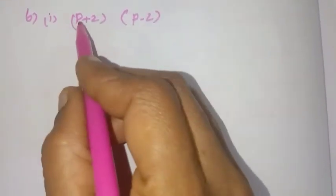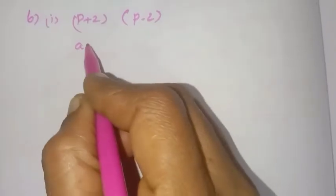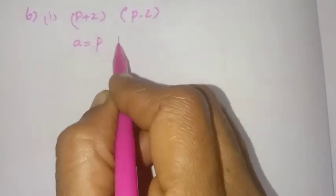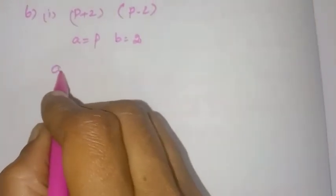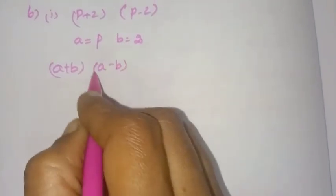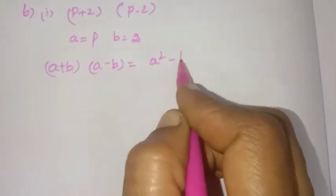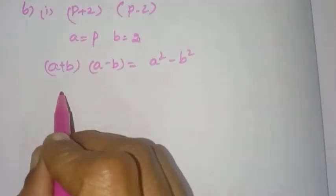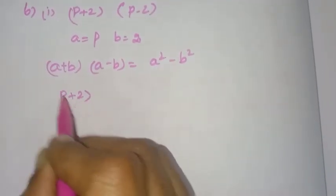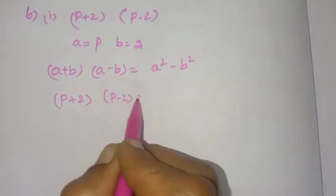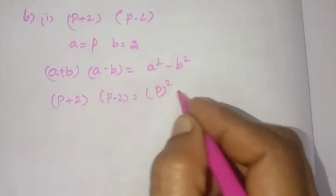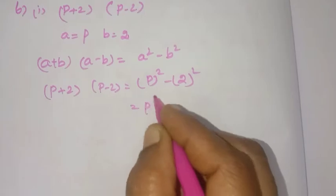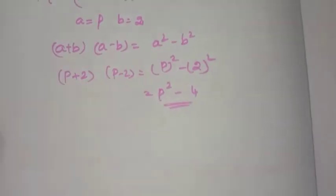Sixth one, first sum: p plus 2 into p minus 2. Using the formula a plus b into a minus b equals a squared minus b squared, with a equals p and b equals 2. So p plus 2 into p minus 2 equals p squared minus 2 squared, which equals p² − 4.